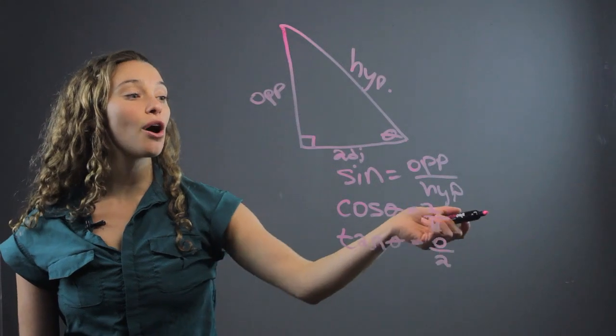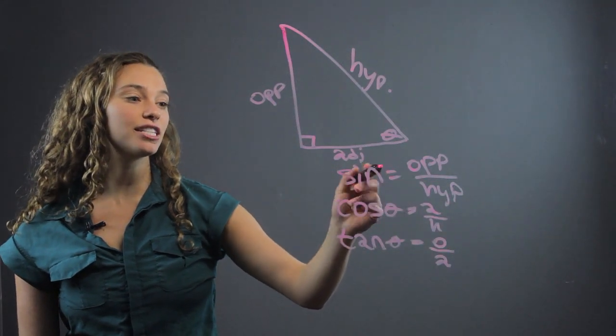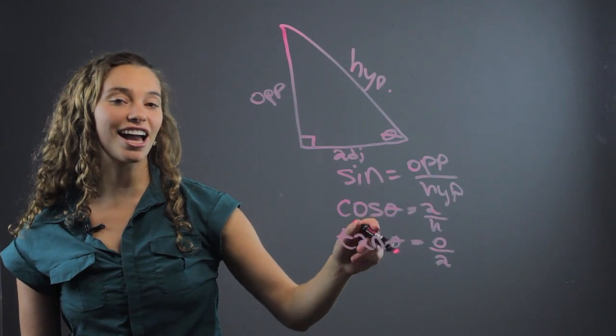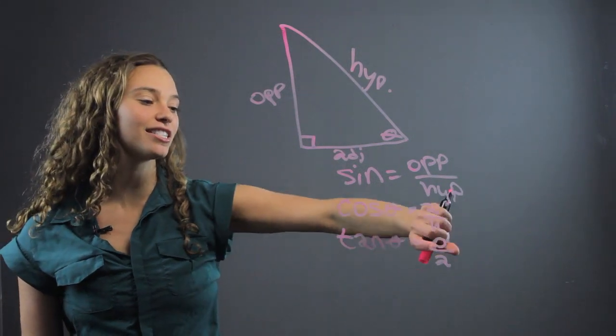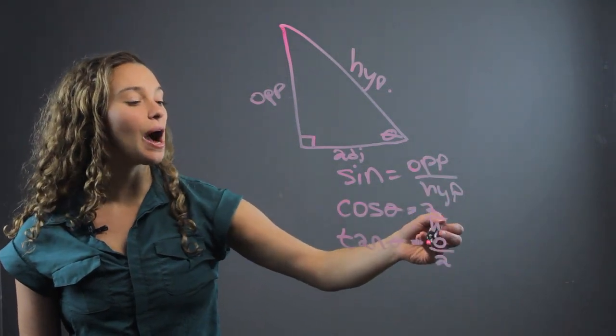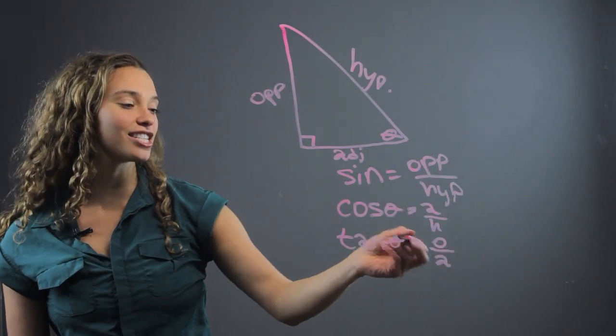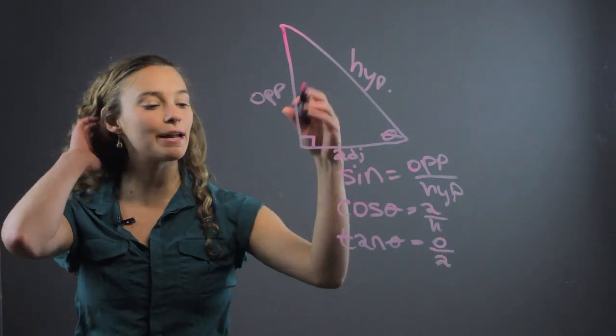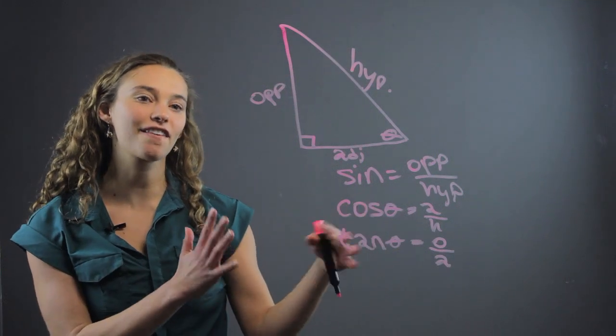There's also cosecant, right, which is the opposite of sine, secant, which is the opposite of cosine, and cotangent, which is the opposite of tangent. So it would be adjacent over opposite. But those are a little bit later on. These are the very basic trigonometric functions.